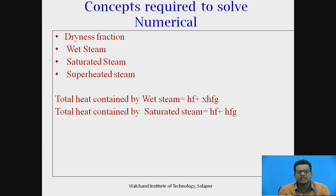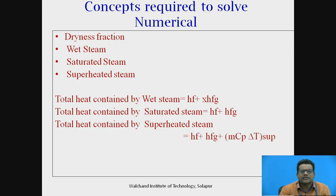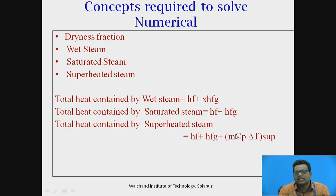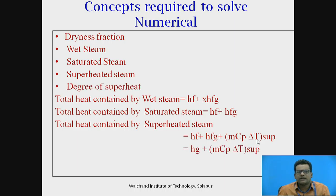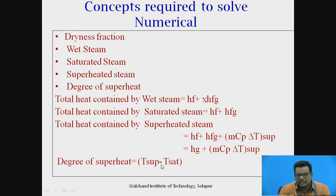For superheated steam — where steam is heated above the saturated condition — the formula is: H = HF + HFG + m·Cp·ΔT (superheated), also written as HG + m·Cp·ΔT, where Cp is the specific heat of steam and ΔT is the degree of superheat, calculated as T_superheated minus the saturation temperature at the given pressure. These formulas are required to solve the numericals.